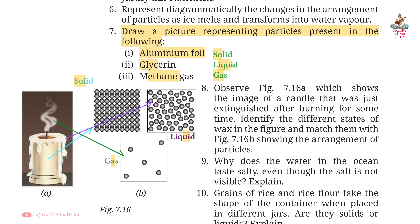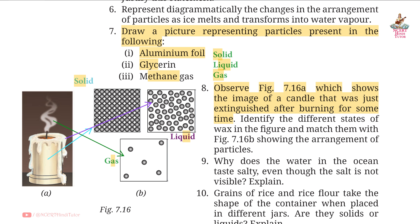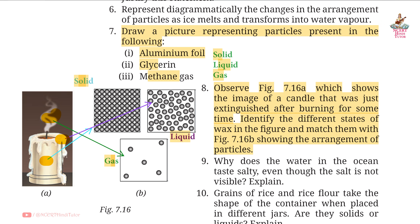Question 8: Observe the figure showing the image of a candle that was just extinguished after burning for some time. Identify the different states of wax and match them with the figure showing particle arrangement. The smoke/vapour above is gas; the melted wax is liquid; and the solid wax body represents the solid state.